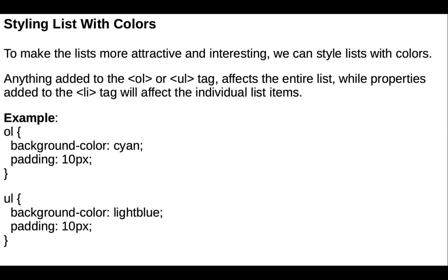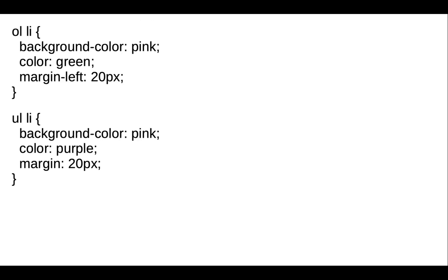If you want to style the list with colors to make it more attractive, anything added to the ol or ul tag affects the entire list, while properties added to the li tag will affect individual list items. We use the background-color property, and you can also set the background-color property individually for each list.